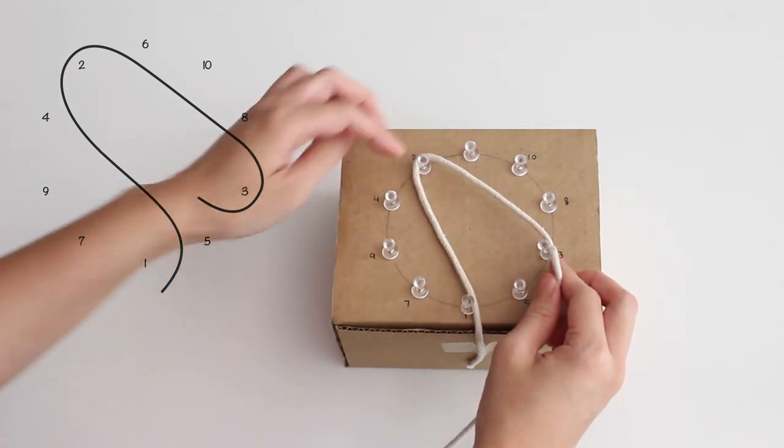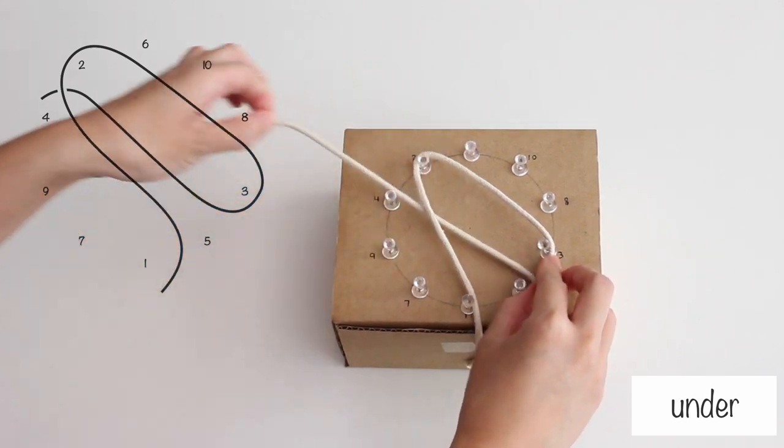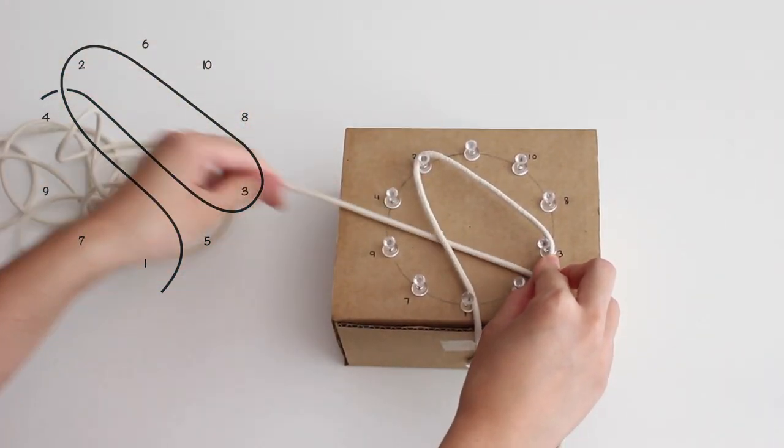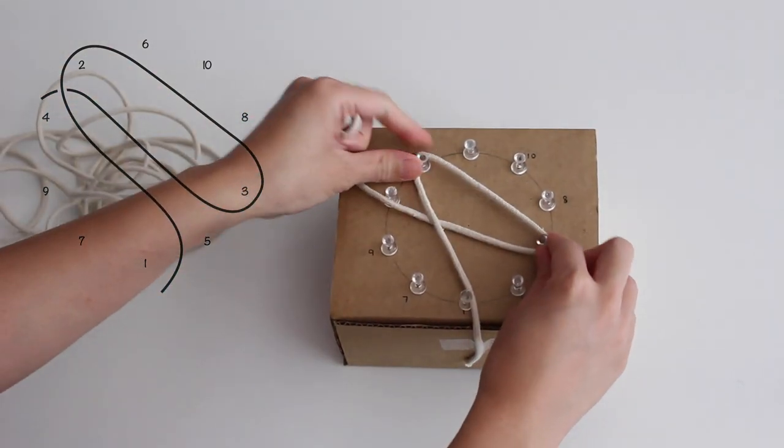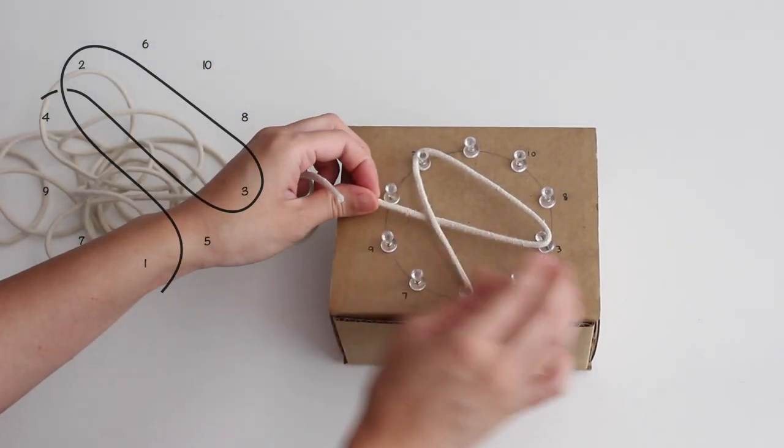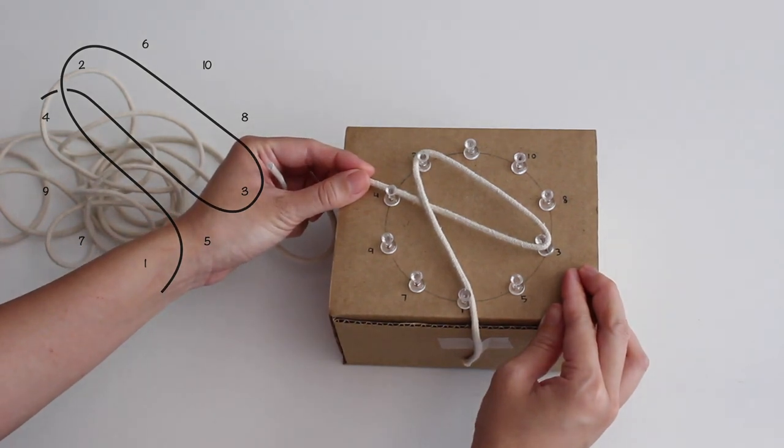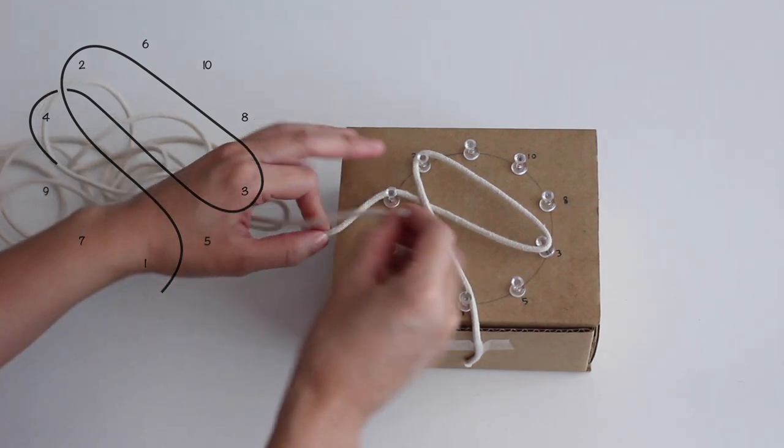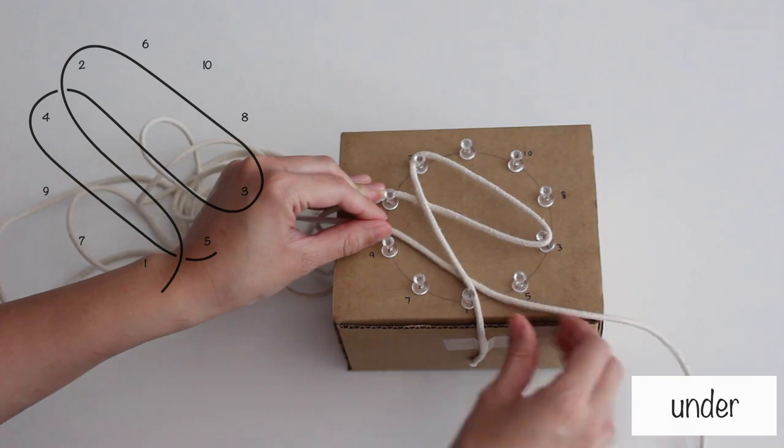Wrap it around the thumbtack and bring the end under the cord before going to number 4. Wrap it around the thumbtack and bring the end under the cord before wrapping it around number 5.